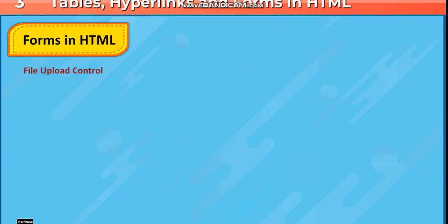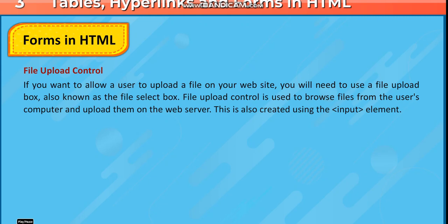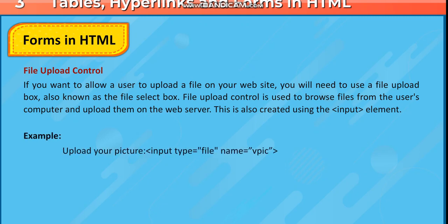File Upload control: If you want to allow a user to upload a file on your website, you will need to use a File Upload Box, also known as the File Select Box. It is used to browse files from the user's computer and upload them to the web server. This is also created using the input element. Example: Upload your picture — input type="file" name="vpick".